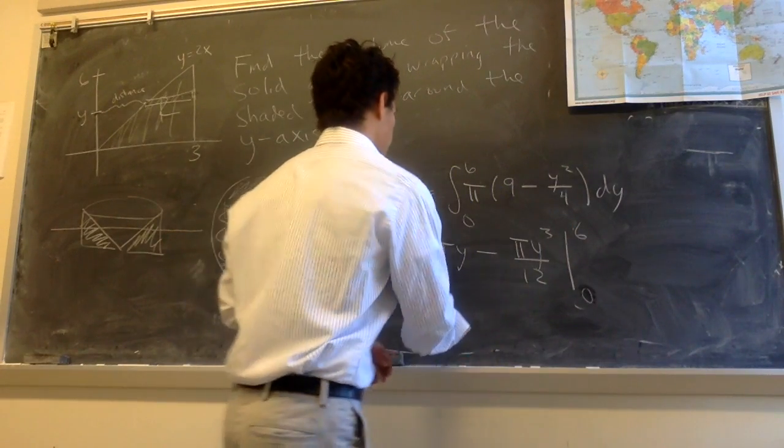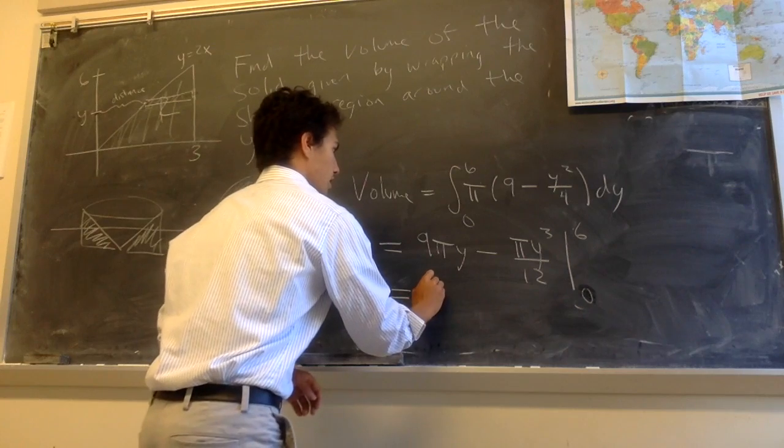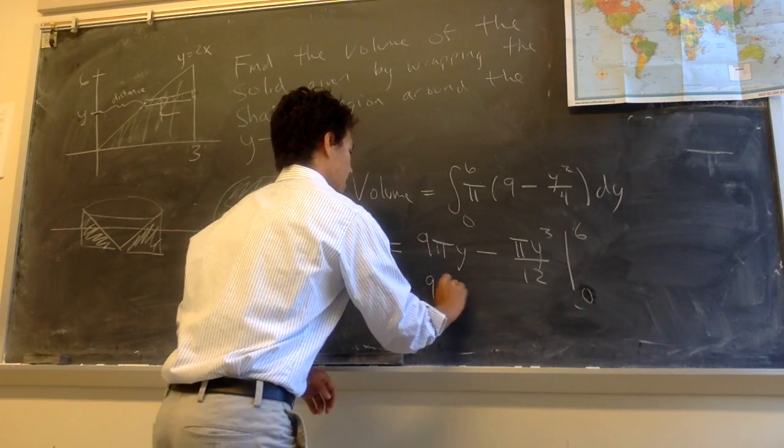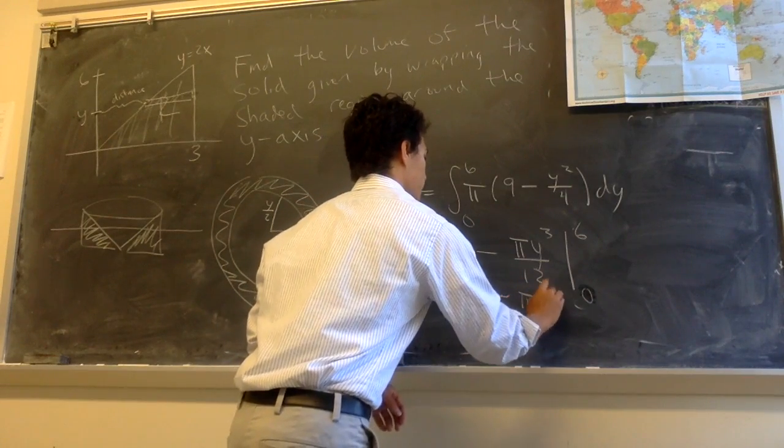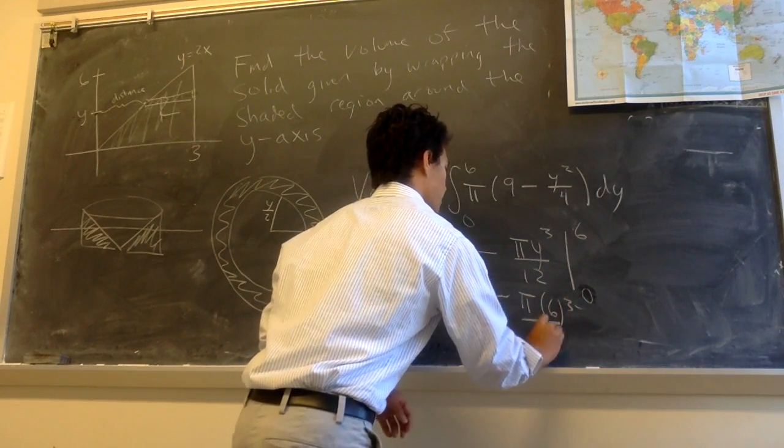And so the final volume should be 9 times pi times 6 minus pi times 6 cubed divided by 12.